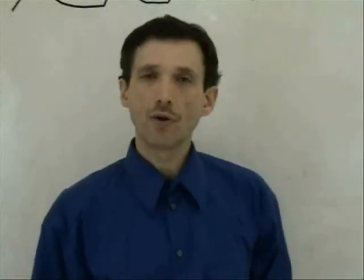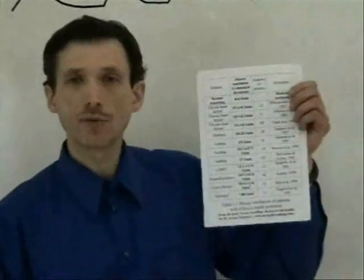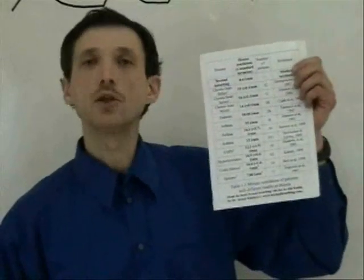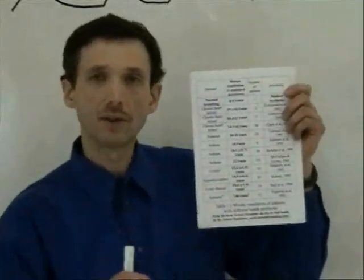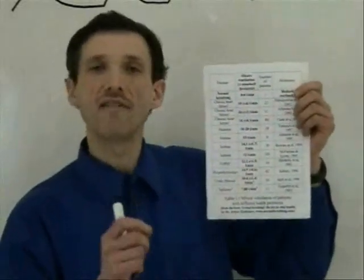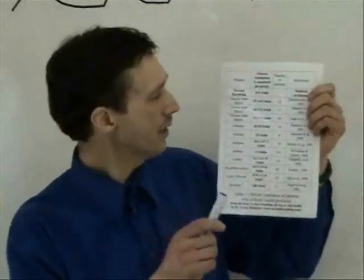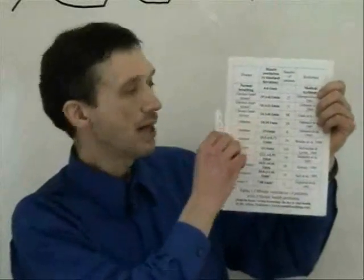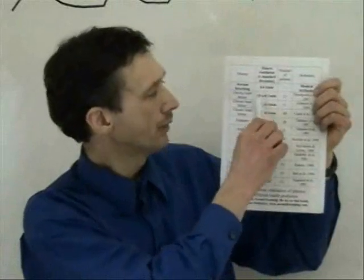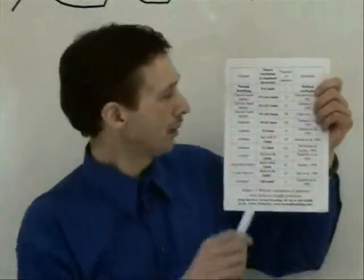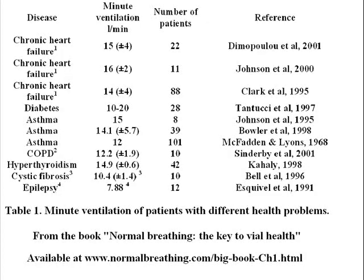What about breathing of sick people? This table is from my book, Normal Breathing, The Key to Vital Health. It has result of Western studies about breathing of sick people. How heavy it is, minute ventilation, how many liters per minute they need. So we can see here that, for example, patients with chronic heart failure, heart disease, they breathe about ten, fifteen, twenty liters per minute. Another study, average minute ventilation, sixteen liters per minute. Another one, fourteen. Diabetes, ten to twenty.